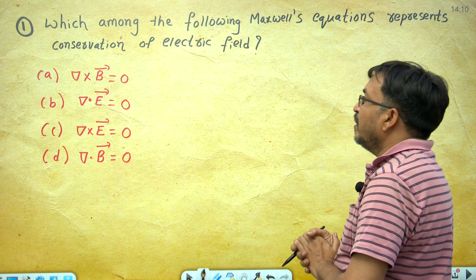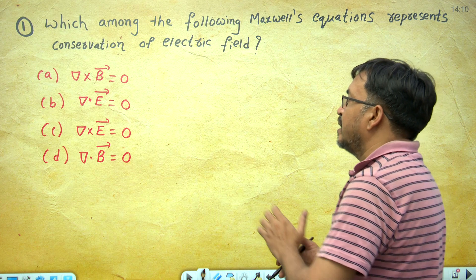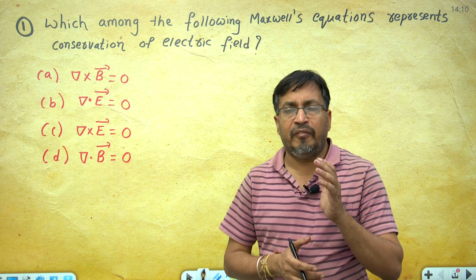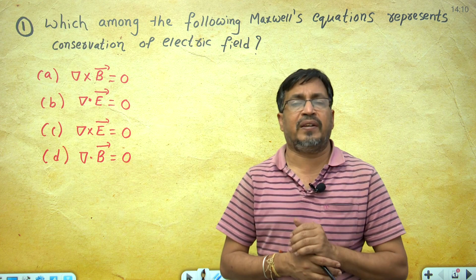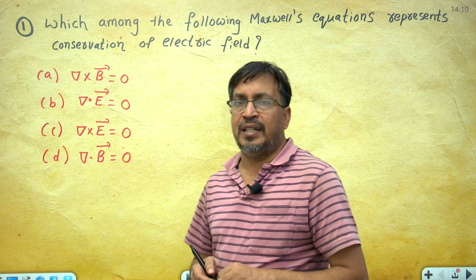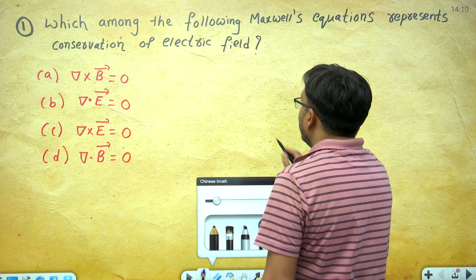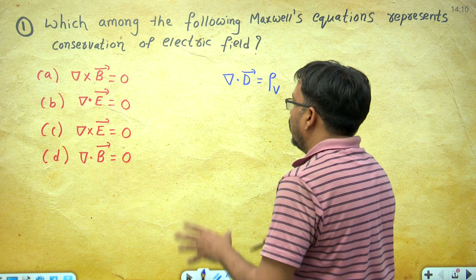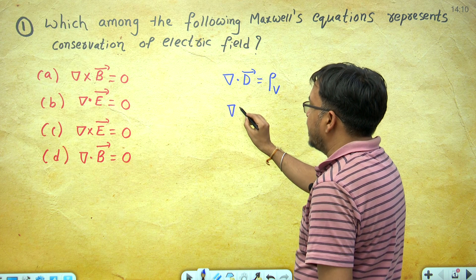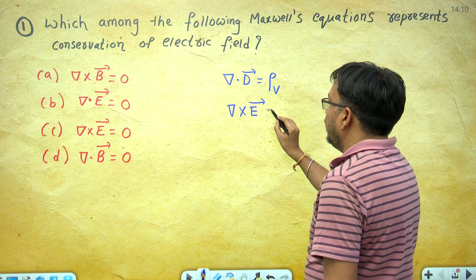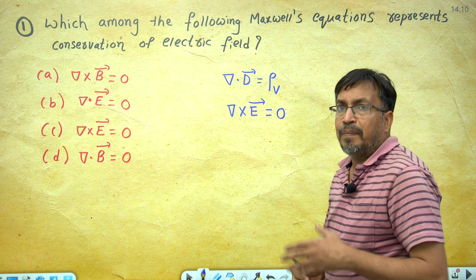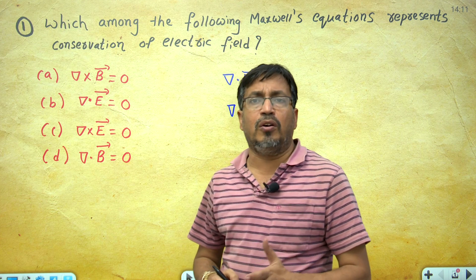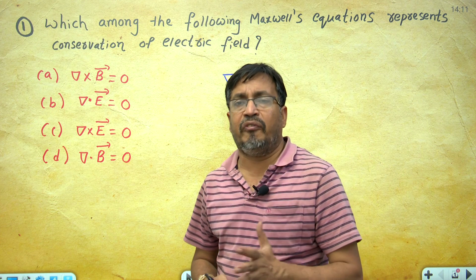The first question: which among the following Maxwell's equations represents conservation of electric fields? There are two Maxwell's equations discussed for electric fields. One is divergence of D equals rho_V, where D is electric flux density and rho_V is volume charge density. The second Maxwell's equation is curl E equals 0. The first is derived from Gauss's law, and curl E equals 0 is derived from the law of conservation of electric field.